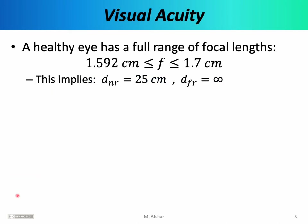Now that we know something about the focal length range of a healthy eye, we can talk about visual acuity. Visual acuity refers to the health of the eye. We'll discuss two specific problems: myopia and hyperopia, also known as nearsightedness and farsightedness. A healthy eye with 20-20 vision has a full range of focal lengths between 1.592 centimeters and 1.7 centimeters, enabling a person to focus on objects as close as 25 centimeters and as far as infinity, creating a clear, focused image with sharply defined boundaries on the retina.